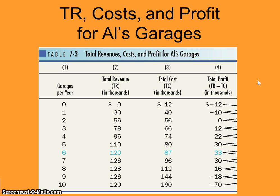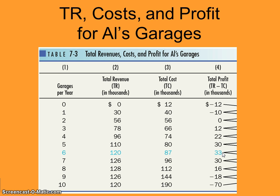For Al's Garages, if you're given total revenue and total costs for each level of output, you can calculate total profit at each level. You can see that Al's profit-maximizing number of garages is six, because that's where his total profit is $33,000 per year — which is totally acceptable because a normal rate of return of zero would already be fine.